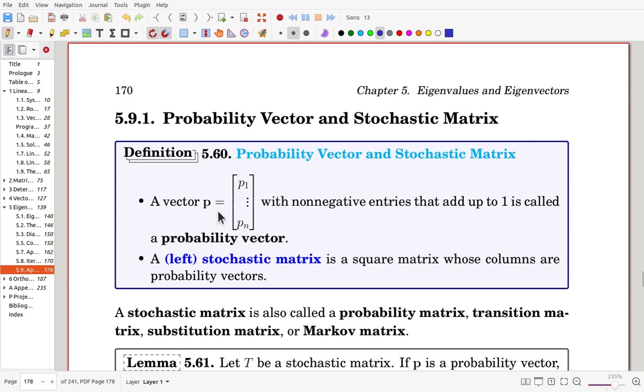A vector P having n components with non-negative entries that add up to 1 is called a probability vector. And a stochastic matrix is a square matrix whose columns are probability vectors. That means each column of the matrix has the entries are non-negative, but the sum is 1.